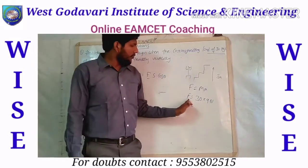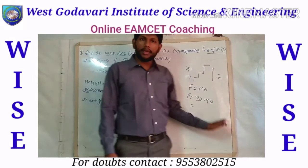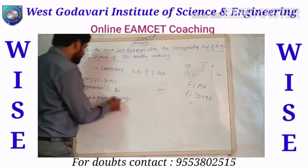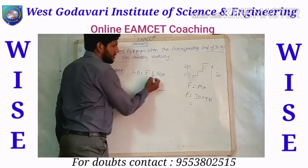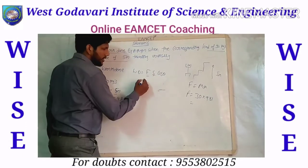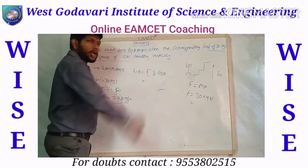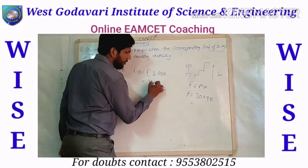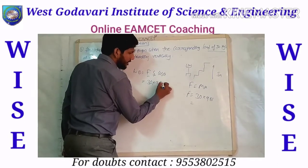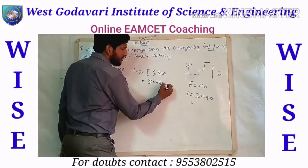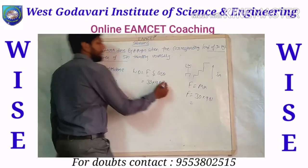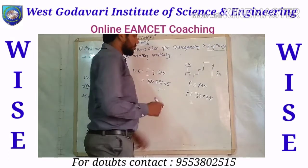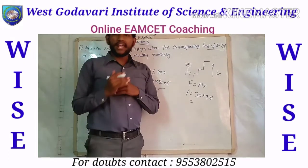Using the formula F = ma, and then multiplying with displacement, we get: force into displacement into cos theta. So that is 30 into 9.81 into the displacement value of 5 meters, into cos theta. Now what is the angle theta?